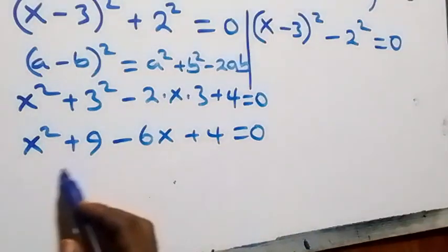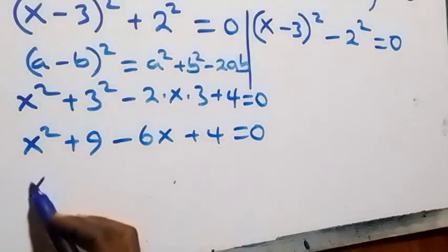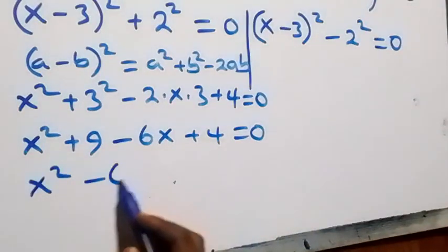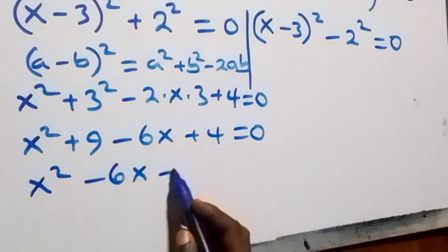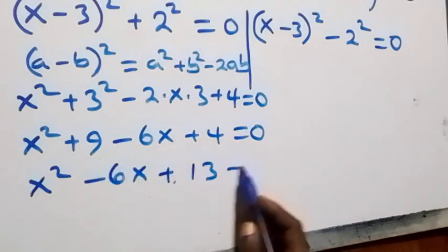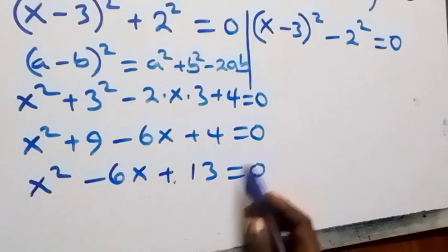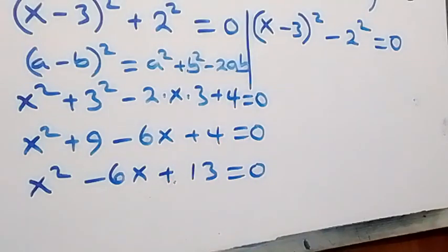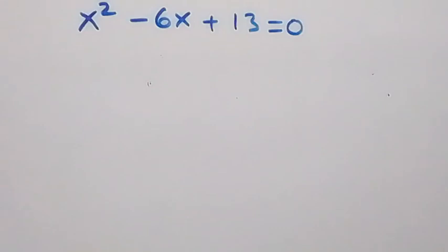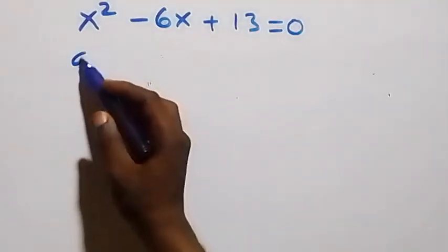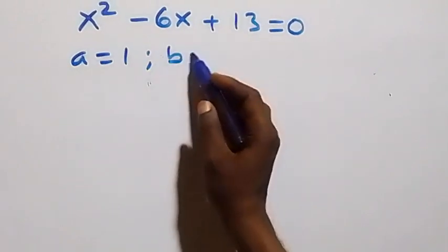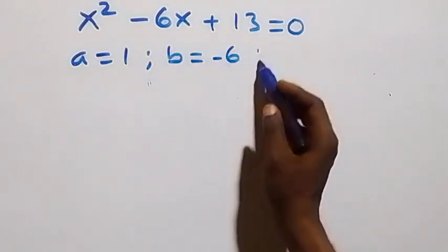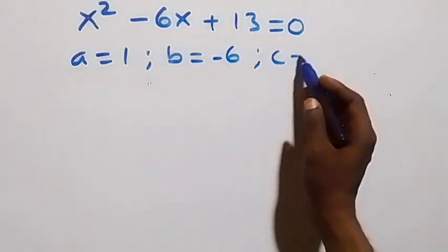Rearranging, we get x squared minus 6x plus 13 equals 0. This is a quadratic equation where a equals 1, b equals minus 6, and c equals 13.